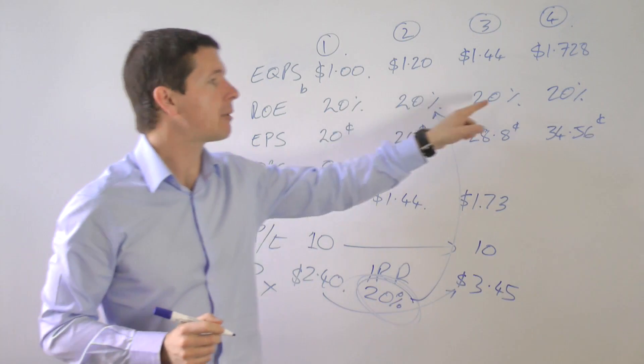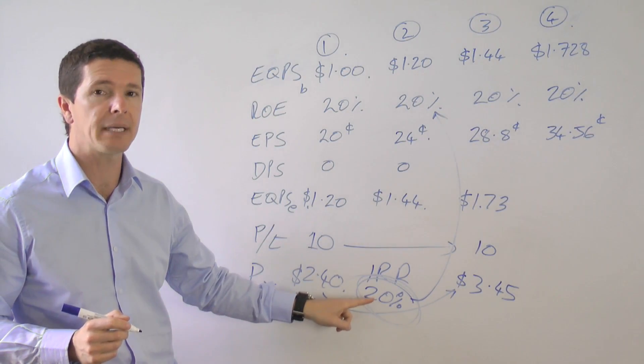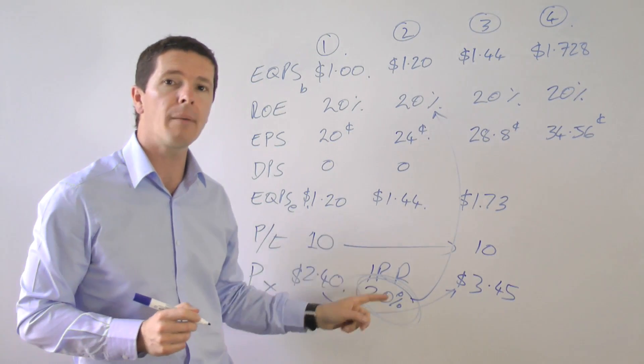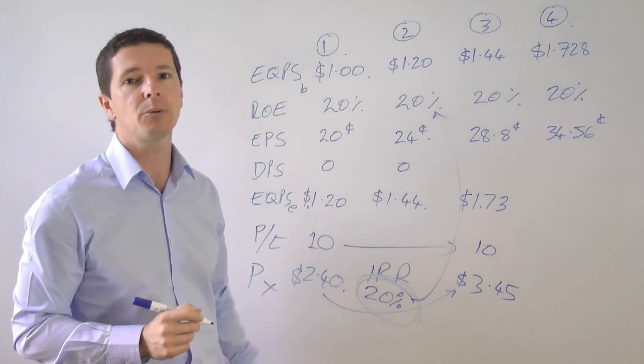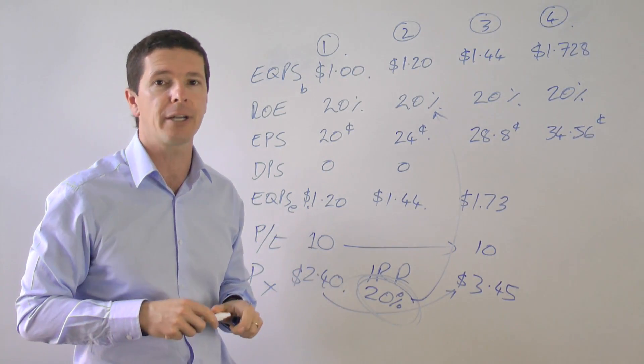The 20% is equal to the return on equity of the company. The higher the return on equity of the company, the higher your internal rate of return is going to be. And that's a primary fundamental reason why at Montgomery Investment Management, we stick to businesses with high rates of return on equity.